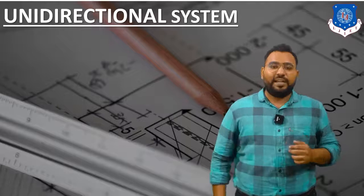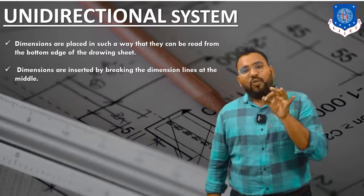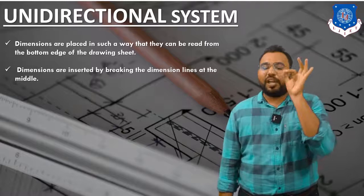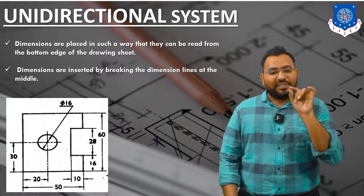The next system is the unidirectional system. Dimensions are placed in such a way that they can only be read from the bottom edge of the drawing sheet — so there is only one viewing direction. Second, dimensions are inserted by breaking the dimension line at the middle.